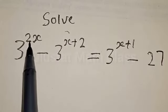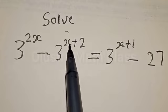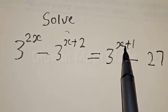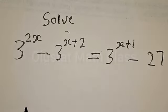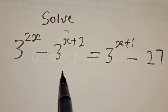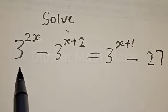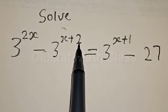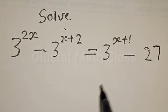Solve: 3 raised to power 2x minus 3 raised to power x plus 2 is equal to 3 raised to power x plus 1 minus 27. Hi everyone, welcome to this class. In today's class, we want to find the value of x from this given exponential equation: 3 raised to power 2x minus 3 raised to power x plus 2 is equal to 3 raised to power x plus 1 minus 27.